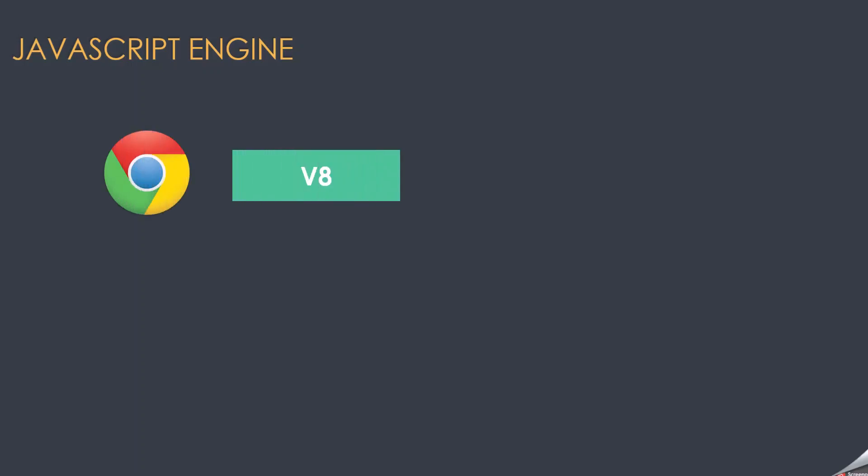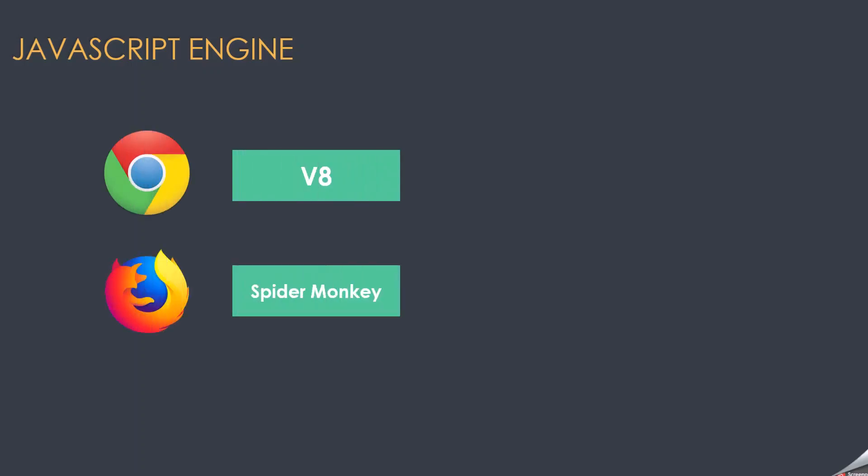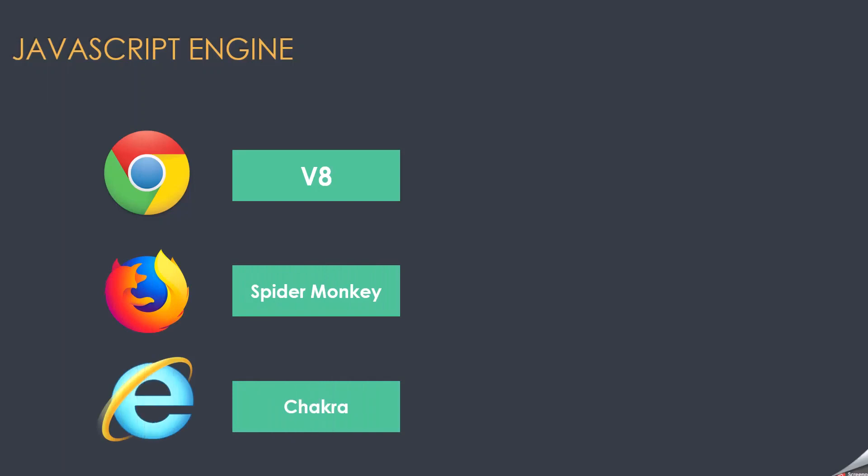Every browser has something called a JavaScript Engine, which is responsible for parsing and executing JavaScript code. For example, the JavaScript engine for Google Chrome is V8, for Firefox it is SpiderMonkey, and for Internet Explorer it is Chakra. This JavaScript engine is built into the browsers.